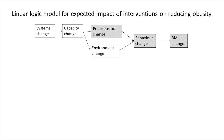Here I show a linear logic model showing the proposed pathways by which an intervention would reduce childhood obesity. The factors related to individuals are shown in the shaded boxes. To achieve BMI change we expect that this will require behavior change, and that in turn will require changes in predisposition such as attitudes, knowledge and beliefs, and changes in food and physical activity environments.